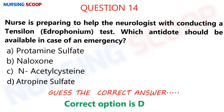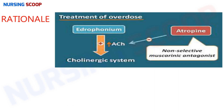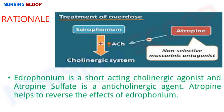The correct option is D. Edrophonium is a short-acting cholinergic agonist that increases the availability of acetylcholine. In case of overdose of edrophonium, we always need an antidote, which is atropine. Atropine is an anticholinergic agent that reverses the effects of edrophonium.